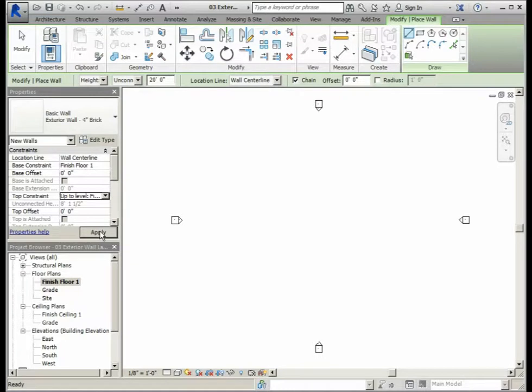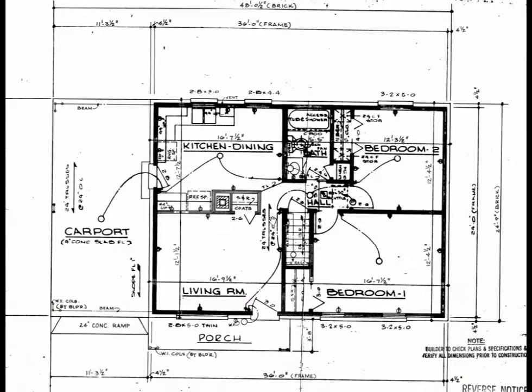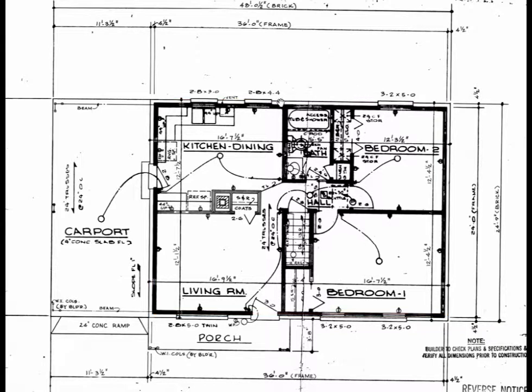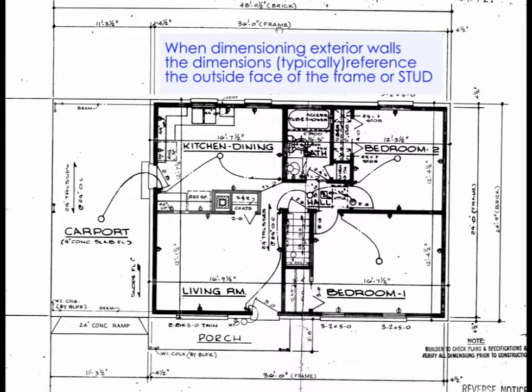After making those selections in the Properties box, click Apply. Looking at the floor plan in your construction documents, the floor plan takes on a rectangular shape. The distance between the two vertical exterior walls is 36 feet, going from the outside stud to the outside stud. For the distance between the two horizontal walls at the top and bottom, we will use 24 feet, also from outside stud to outside stud.